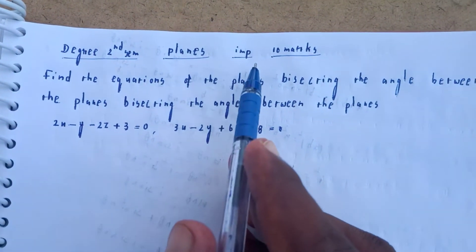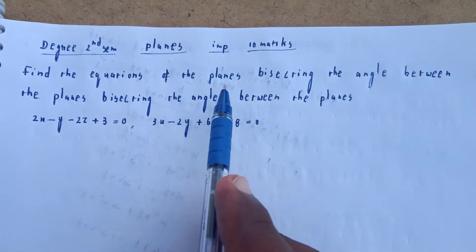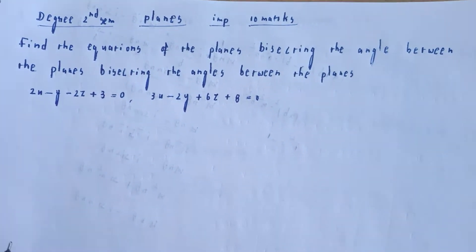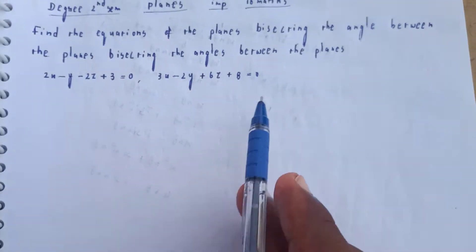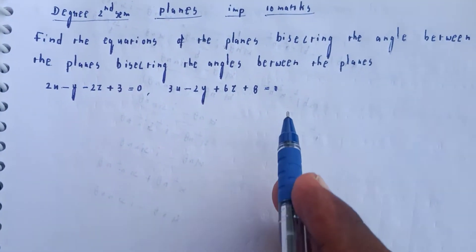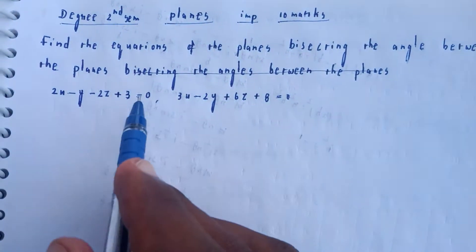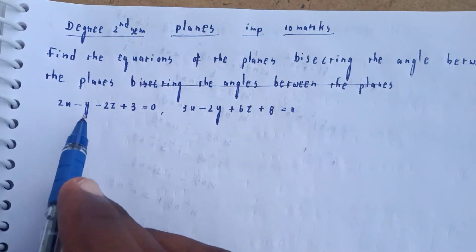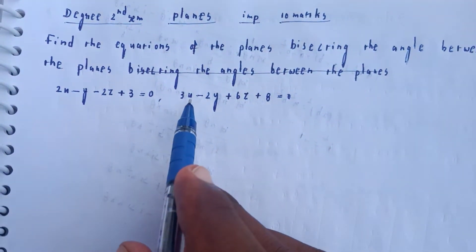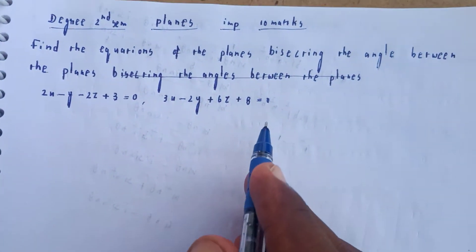The degree of planes should be important. Find the equations of the planes bisecting the angles between the planes: 2x minus y minus 2z plus 3 is equal to 0, and 3x minus 2y plus 6z plus 8 is equal to 0.